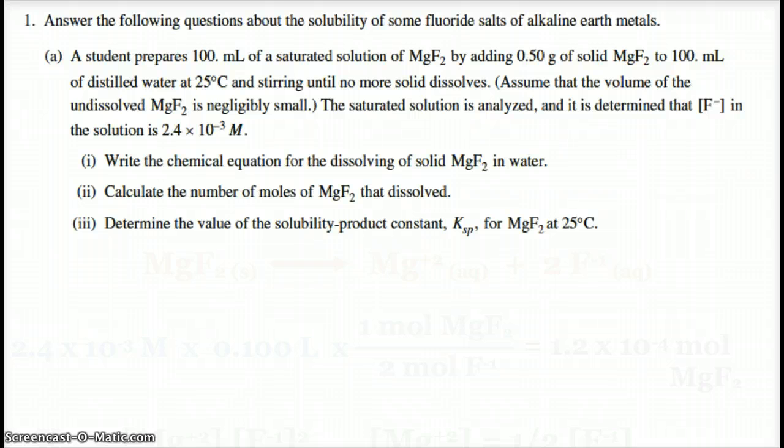So a student prepares 100 milliliters of a saturated solution of magnesium fluoride. So that's going to mean not everything's dissolved. There's going to be stuff on the bottom. So 0.5 grams of the solid is added to 100 mils of distilled water at our magic 25 degrees Celsius. And again, no more dissolves. The volume of the undissolved solid is negligible. This saturated solution is analyzed, and we find that the concentration of the fluoride ion in the solution is 2.4 times 10 to the negative third molar. So first step, write the chemical equation for the dissolving of solid magnesium fluoride in water. We're not precipitating it, we're dissolving it.